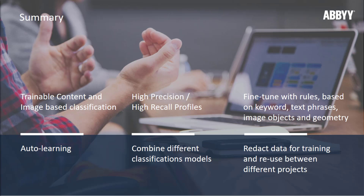We covered a lot of ground in this presentation. We talked about classification use cases and how we can train classification based on image only, text only, or a combination of the two. We talked about different profiles — high precision or high recall — and the steps for setting up a classification process, and how we can fine-tune classification with rules based on keywords in FlexiLayout Studio. We also touched on auto learning and doing cascading where we combine different classification models, and we talked about reusing classification models between different projects.